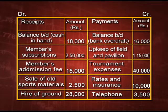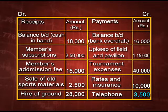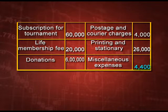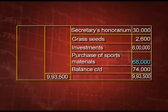On the payment side: balance brought down — this is a bank overdraft rupees 16000; upkeep of field and pavilion rupees 15000; tournament expenses rupees 40000; rates and insurance rupees 10000; telephone rupees 3500; postage and courier charges rupees 4000; printing and stationery rupees 26000; miscellaneous expenses rupees 4400; secretaries honorarium rupees 30000; grass seed rupees 26000; investment rupees 6 lakh; purchases of sports material rupees 68000; balance carried down — closing cash balance rupees 74000.